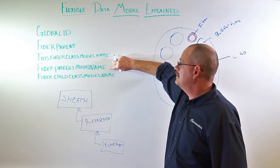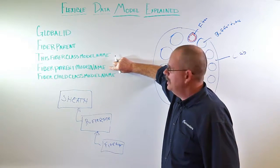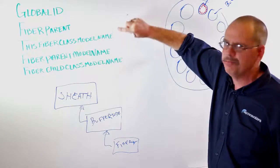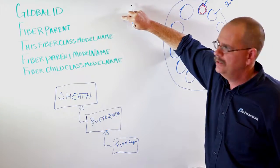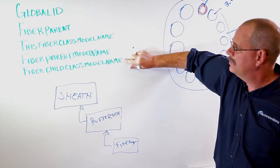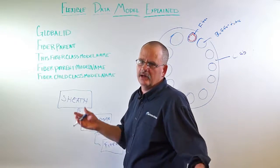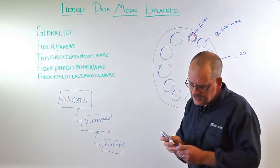The fourth field is fiber parent model name. That will be the model name that's assigned to the parent object. Lastly, the fiber child class model name. That's the model name as you would expect of the child.